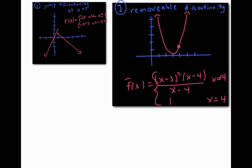In this original example, our function had a removable discontinuity because it wasn't defined when x equals four. But a function could also have a removable discontinuity because it's defined in the wrong place at x equals four — for example, too high or too low to fit the trend of f.